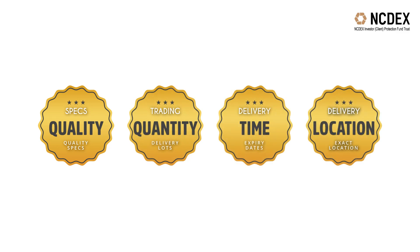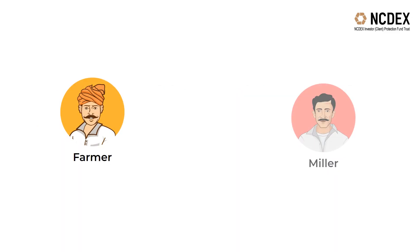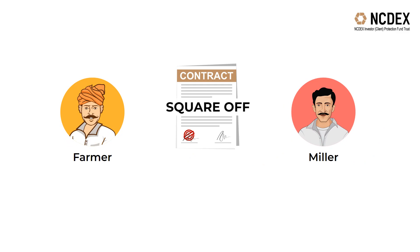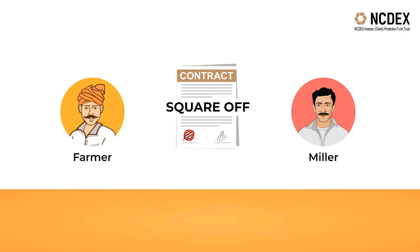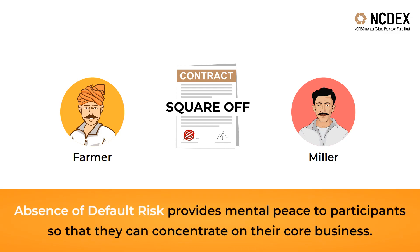Futures contracts are standard contracts on quality specs, trading and delivery lots, expiry dates, and location. The farmer and Miller both have rights as well as obligations. Either of them can square up without waiting for the contract's expiry and book profit or loss depending upon movement of prices. Absence of default risk provides mental peace to participants so that they can concentrate on their core business.